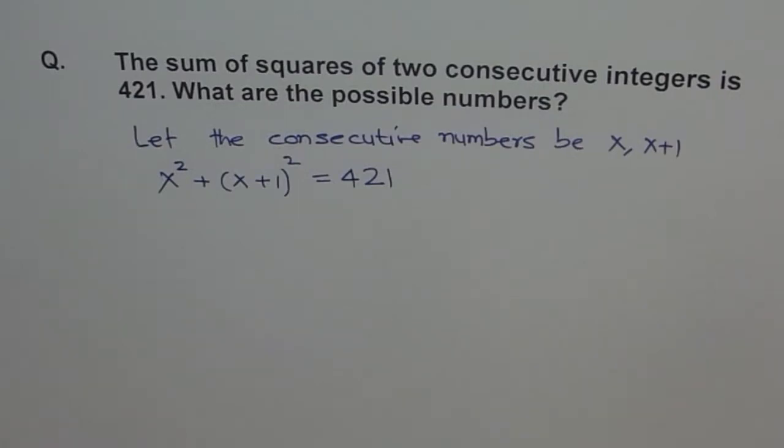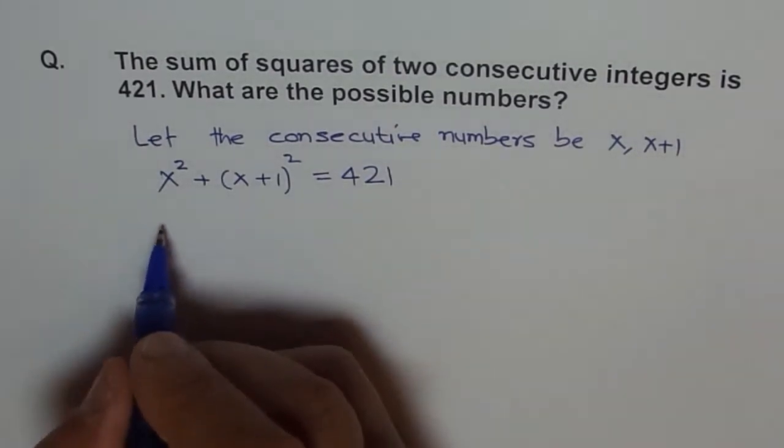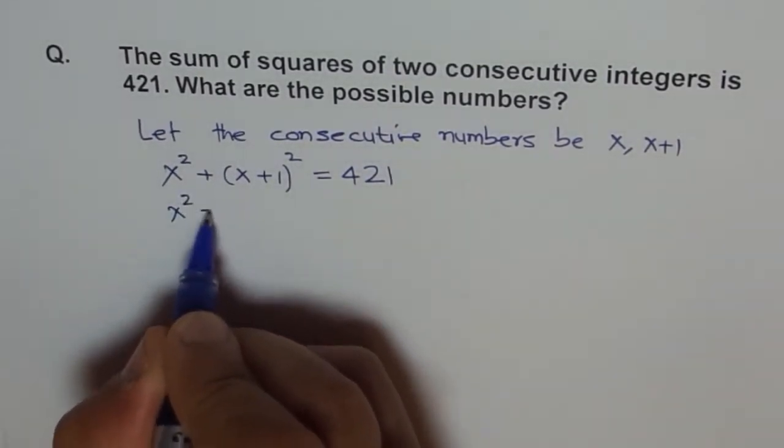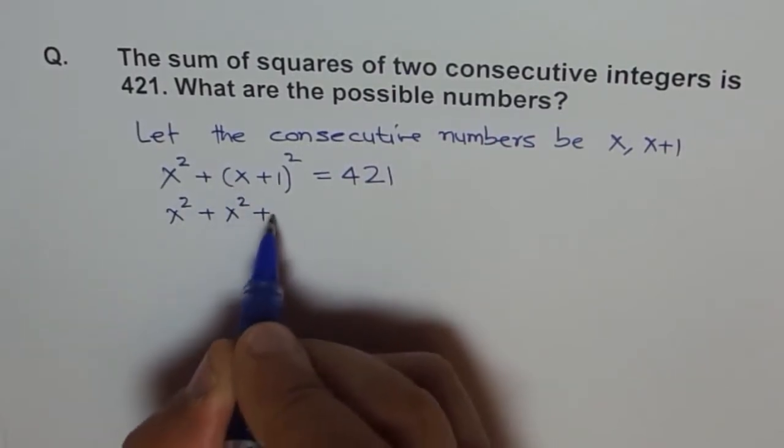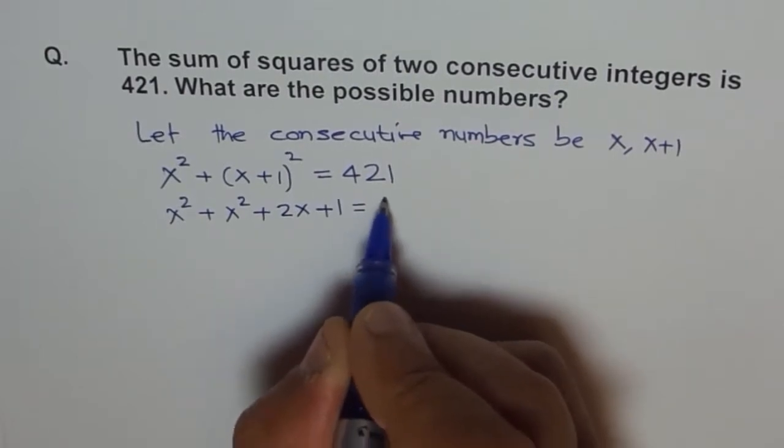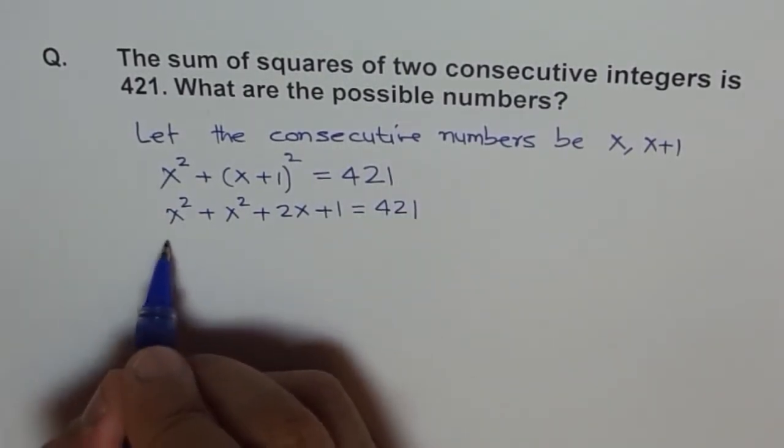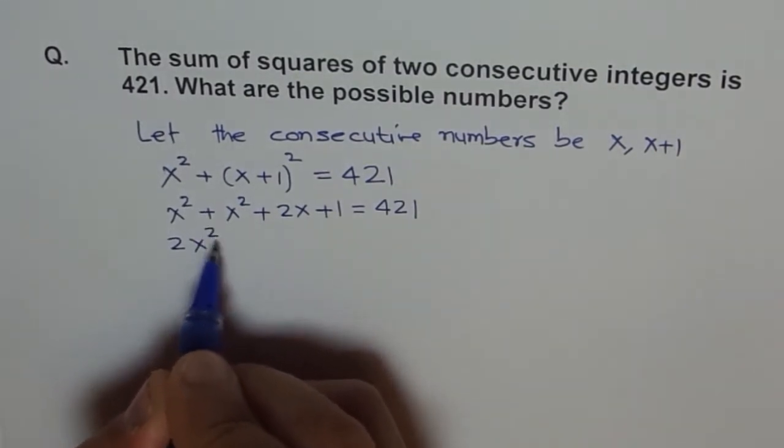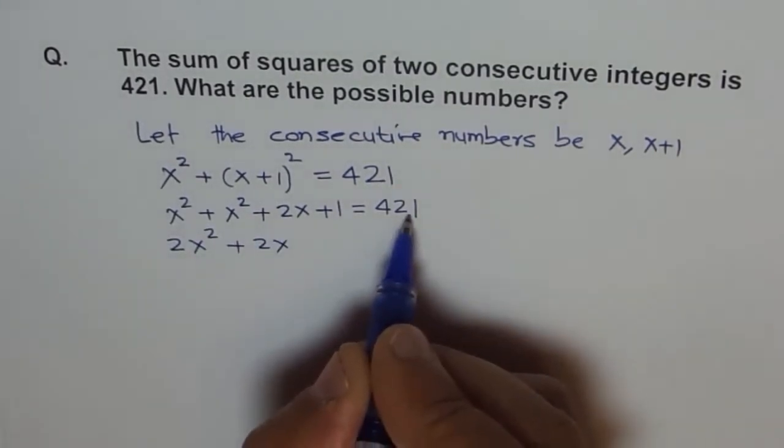Let's expand it. You get X² plus this square is X² plus 2 times a b which is 2X plus 1 equals 421. Let's bring all the terms together. We get 2X² plus 2X, when it comes here minus 421 plus 1 is minus 420 equals 0.